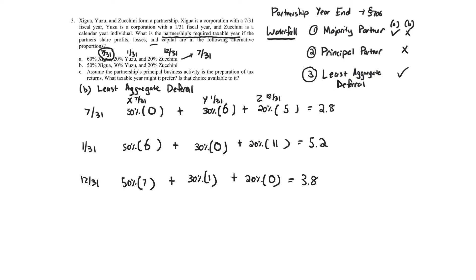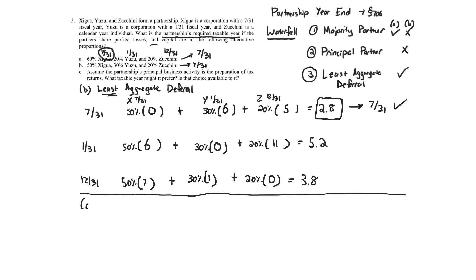We've done our calculation. It's called least aggregate deferral, so you pick the smallest. July 31st = 2.8, January 31st = 5.2, December 31st = 3.8. Therefore, under least aggregate deferral for B, the answer is July 31st is the required year end. Note that in both A and B, we end up with a July 31st year end — in A via the majority partner test, in B via least aggregate deferral — the only thing that changed was the ownership percentage.